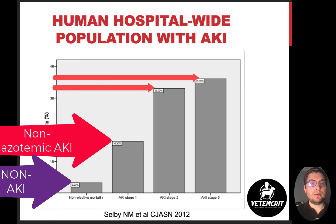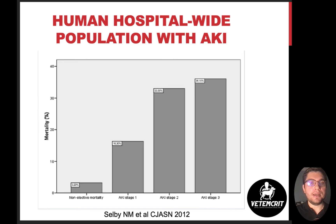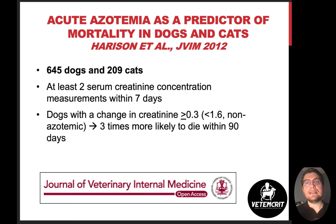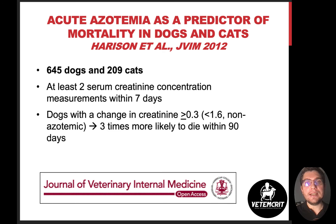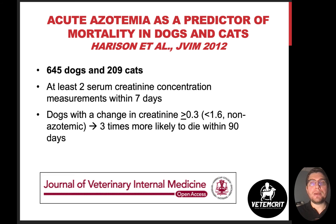What about evidence in veterinary medicine? We lack large prospective studies, but a few have been published. A retrospective paper published in 2012 in JVIM looked at acute azotemia as a predictor of mortality in dogs and cats, including 645 dogs and 209 cats, requiring at least two serum creatinine concentrations within seven days. They found that non-azotemic dogs with creatinine below 1.6 mg/dL but with an increase of at least 0.3 mg/dL within seven days were three times more likely to die within 90 days compared to non-AKI patients, independently of other factors.